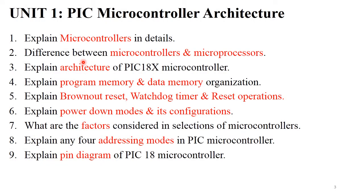Unit 1 is PIC Microcontroller Architecture. The first frequently asked question is 'Explain microcontroller in detail,' where you have to cover what a microcontroller is, its advantages, disadvantages, features, and applications. This is generally asked for 4 to 6 marks. The next question is 'Difference between microcontroller and microprocessor,' where you need to mention any 6 differences. This is also generally asked for 4 to 6 marks.